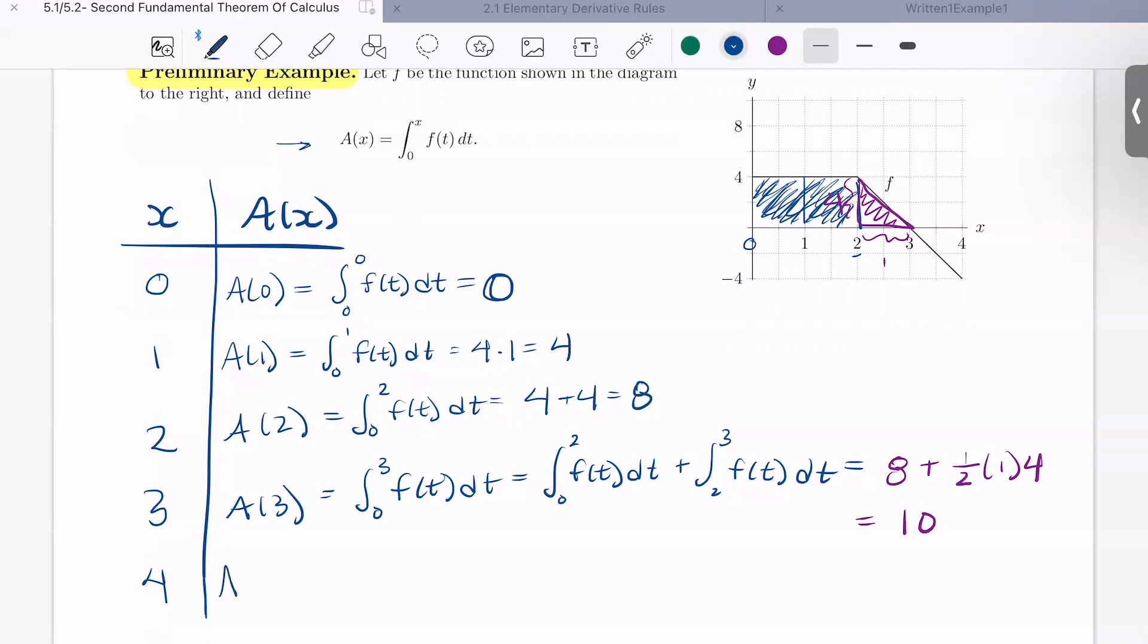All right. And finally, we have a of 4, which is the integral from 0 to 4, f(t) dt. So now we have our area of 10. Now we need to add on the area from 3 to 4. Now notice this value, the height of our rectangle is now at negative 4. So the area of this rectangle would be 1 half, 1 times negative 4, which would be plus negative 2. So now we're back at 8. All right. So feel free to pause the video and check your work here.